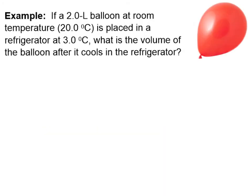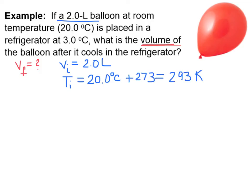Let's do this example problem together. Let's say we have a 2.0 liter balloon at room temperature, which is about 20 degrees C. And it's placed in a refrigerator, which is at 3 degrees C, which is 3 Celsius degrees above freezing. What's the volume of the balloon after it cools in the refrigerator? So our unknown is the final volume. What is the volume after it cools in the refrigerator? So VF is our unknown. We know the initial volume is 2 liters. The initial temperature is 20 degrees C. We need to convert that to Kelvin. That gives us 293 Kelvin. We know our final temperature is 3.0 degrees C. We need to convert that to Kelvin. That's 276 Kelvin.